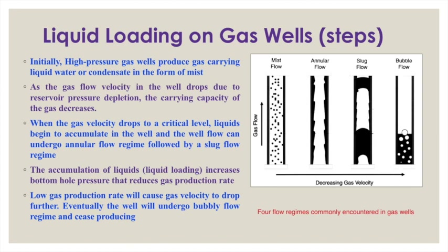This slide shows the steps that take place during liquid loading. Initially, a high-pressure gas well produces gas carrying liquid water or condensate in the form of mist. This mist flow carries liquid particles and does not allow the liquid to settle down. As the gas velocity reduces due to reservoir pressure depletion, the carrying capacity of gas decreases.